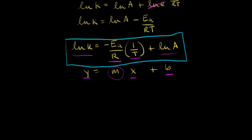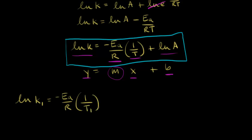We can figure out another form. Starting with the equation we just derived, let's write it for one specific temperature. At one specific temperature, we have a specific rate constant. So the natural log of k1 is equal to negative Ea over R times one over T1, plus the natural log of A.